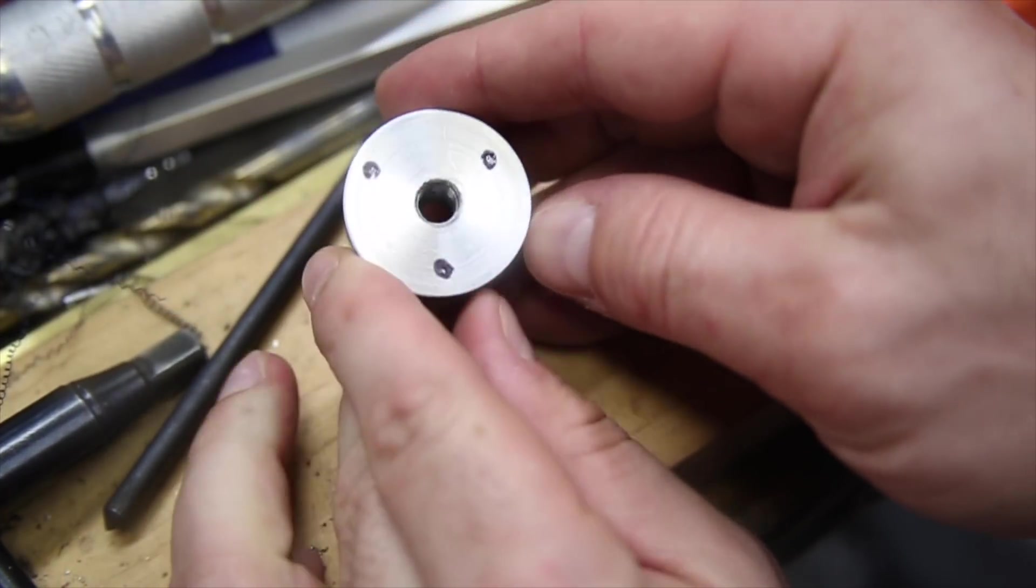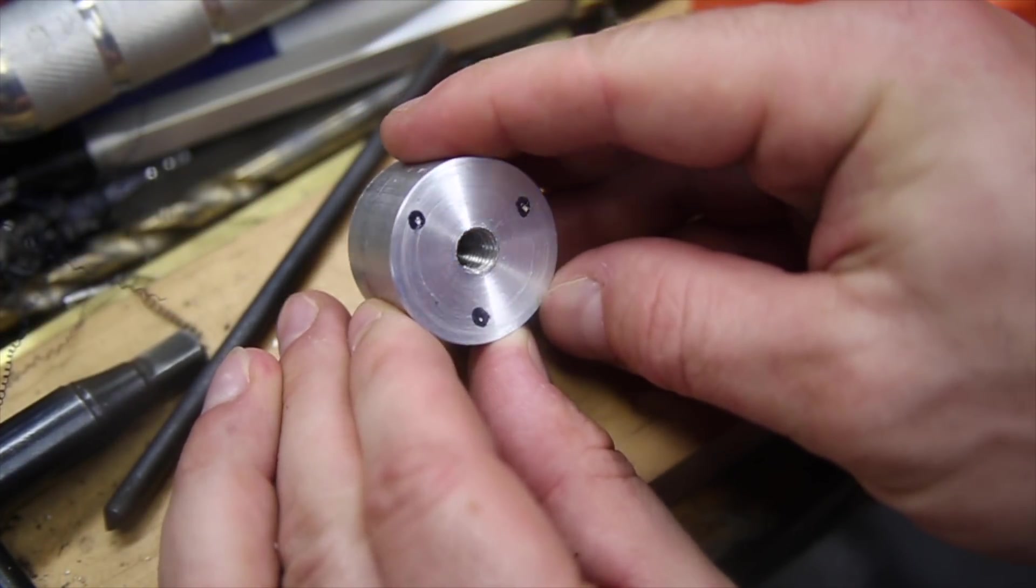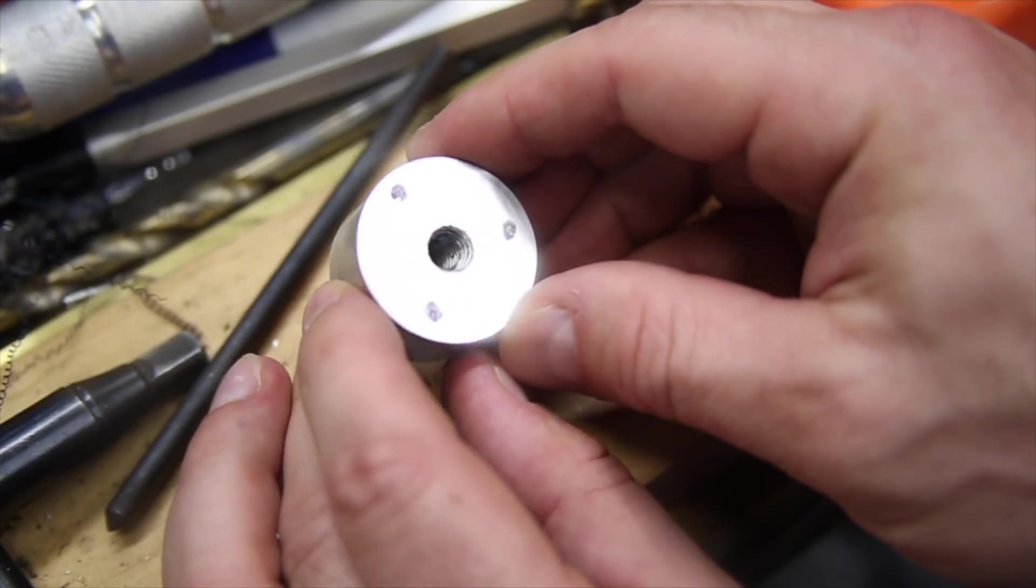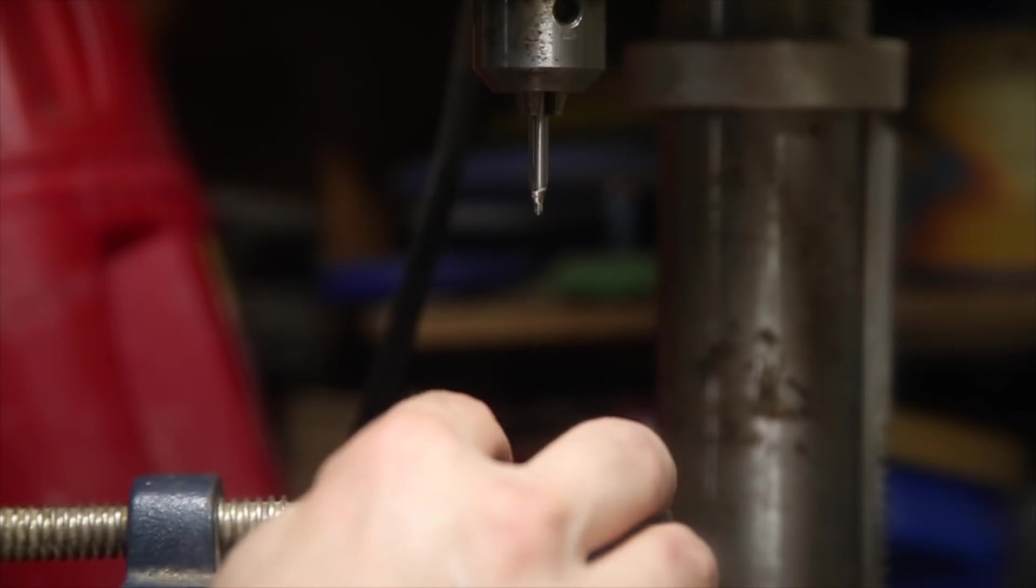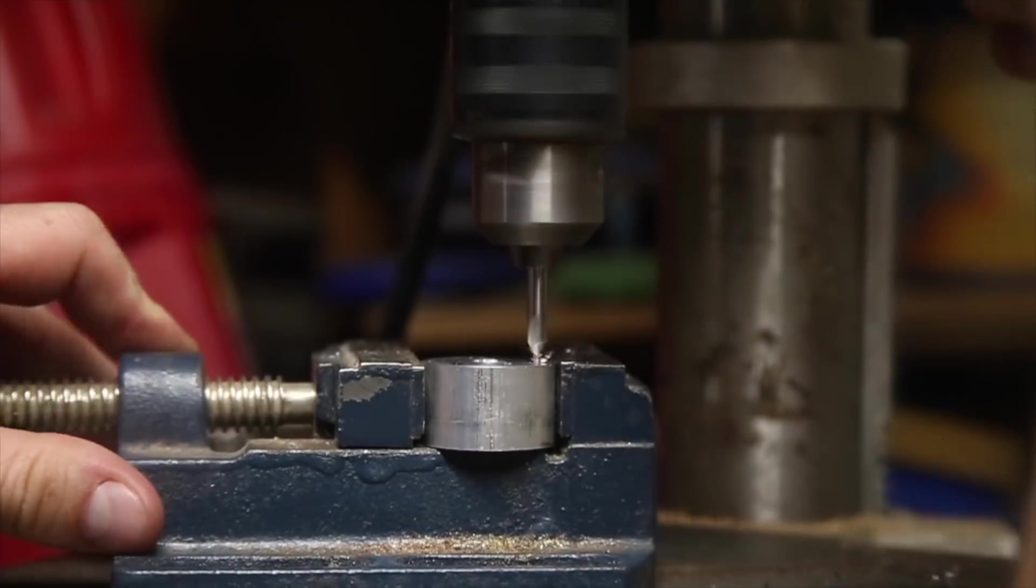I added a little bit of sharpie just to make the punch marks more visible. Now that these are marked, the first function of the center hole has done its job and is no longer needed. Now I just need to drill and tap the three mounting holes.